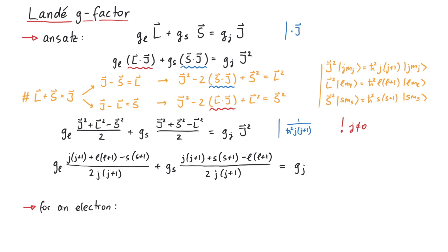In the case of an electron, we can use the electron-specific values for g-l and g-s, and also use s equals 1 half, which yields a much more simple equation. However, there is a slight problem with our ansatz here. l plus s equals j, but if g-l and g-s are not both equal to 1, the vector on the left is not parallel to j anymore. So how can we improve this derivation?